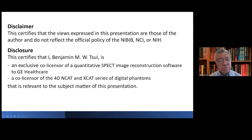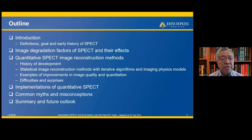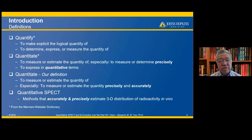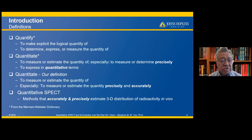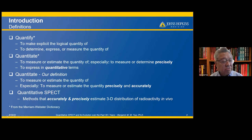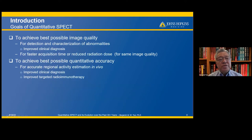This shows my couple of disclosures relevant to the subject matter of this presentation. This shows a brief outline of my presentation. First, I'd like to introduce our definition of quantitative SPECT, which is to estimate or measure the quantity precisely and accurately. The definition of quantitative SPECT is the method that accurately and precisely estimates the three-dimensional distribution of radioactivity in vivo. The goals of quantitative SPECT are to achieve the best possible image quality and the best possible quantitative accuracy.